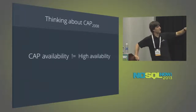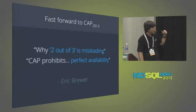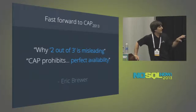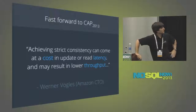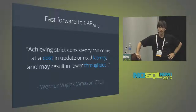The C in the CAP theorem is not the C in ACID. Availability in the CAP theorem is not high availability. High availability in the sense of fault tolerance is not the same as CAP availability. By 2013, Eric Brewer was saying 'why two out of three is misleading' — it's not really pick two out of three; it's when a partition happens, do you choose C or A? What CAP prohibits is perfect availability: that a database node, even if disconnected from the rest, can continue to do writes. Werner Vogels in 2013 was saying achieving strict consistency can come at a cost of latency or throughput — performance. Which begs the question: how expensive is it?